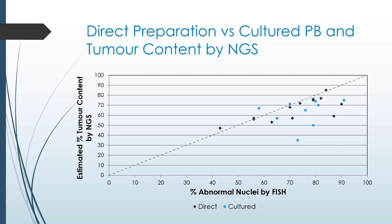We also wanted to look at whether there was an effect of culturing the peripheral blood on the percentage of abnormal nuclei by FISH versus the tumor content estimate by NGS. Looking at this graph, the black dots indicate specimens that were a direct preparation and the blue dots represent those that were cultured. The x-axis shows abnormal nuclei by FISH and the y-axis shows percent tumor content by NGS. We can see there is not a strong bias when the sample is cultured relative to the tumor estimate by NGS, which is a good indication for our lab as we perform both direct preparations and cultures.